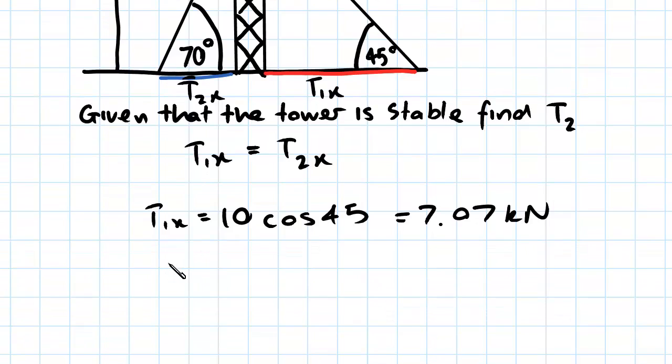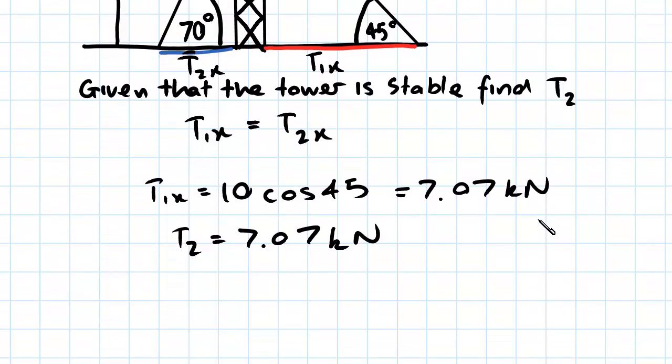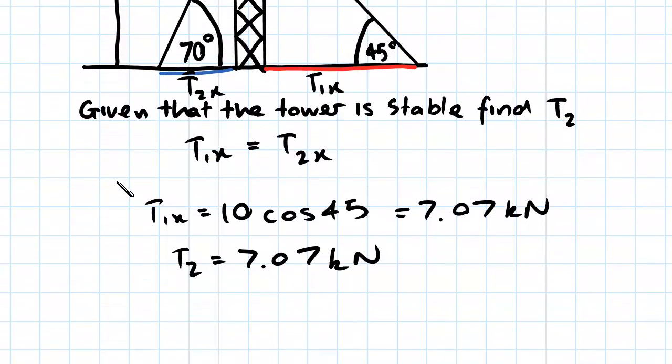So we can say t2x equals 7.07 kilonewtons. So with this we have all the information we need to find the tension in this cable. So just using simple trigonometry we have...